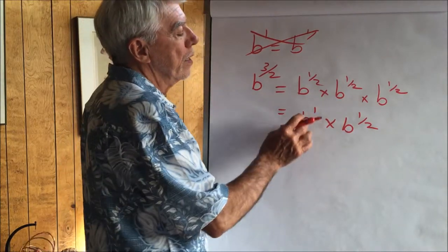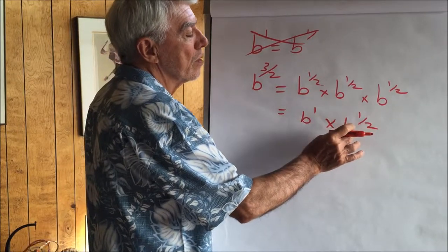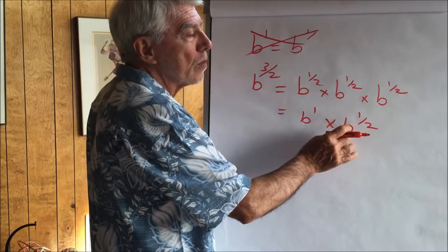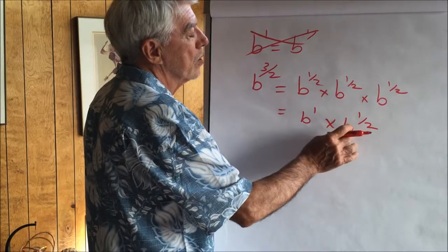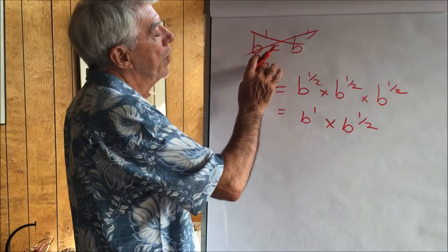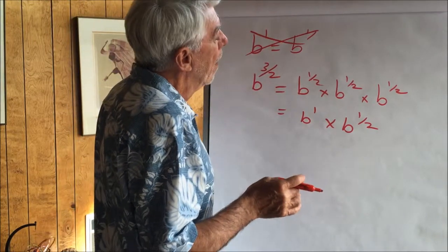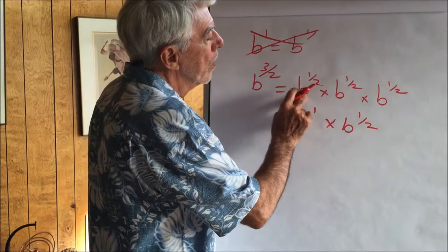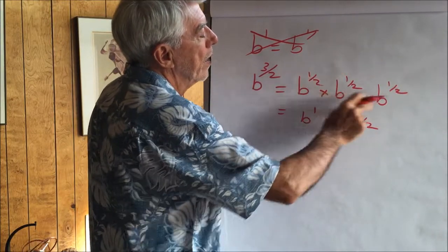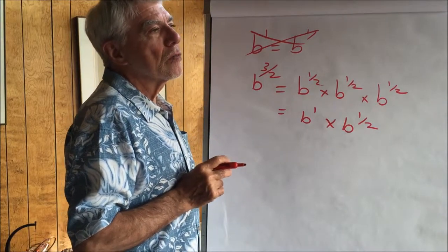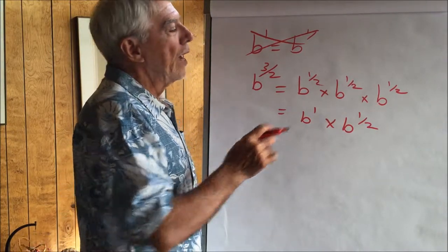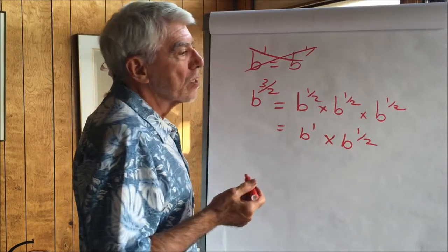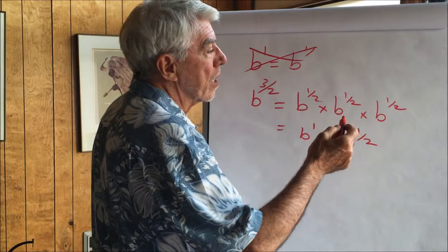In the case where the base is 10, this would be 10 times the square root of 10. The square root of 10 is a little more than three — let's say 3.2. So we have 10 times 3.2, or 32. So b to the three halves is 32. Multiplication is really a shorthand for addition. Instead of writing a half plus a half plus a half, we can just say three times a half.